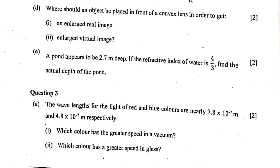Question 3a: Wavelengths of red and blue light are 7.8 × 10⁻⁷ m and 4.8 × 10⁻⁷ m respectively. Which color has greater speed in vacuum? Both have the same speed: 3 × 10⁸ m/s. Which color has greater speed in glass? Red — with wavelength 7.8 × 10⁻⁷ meters.